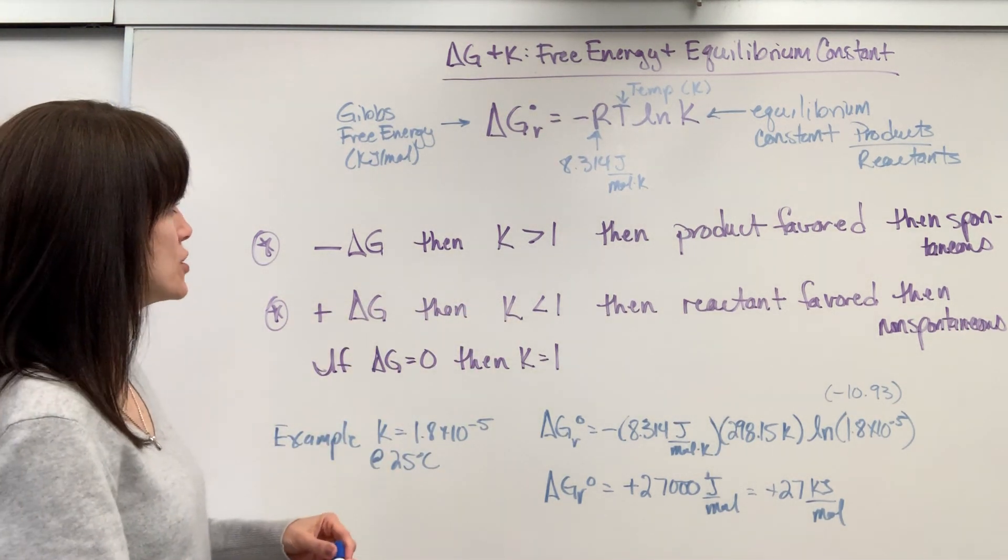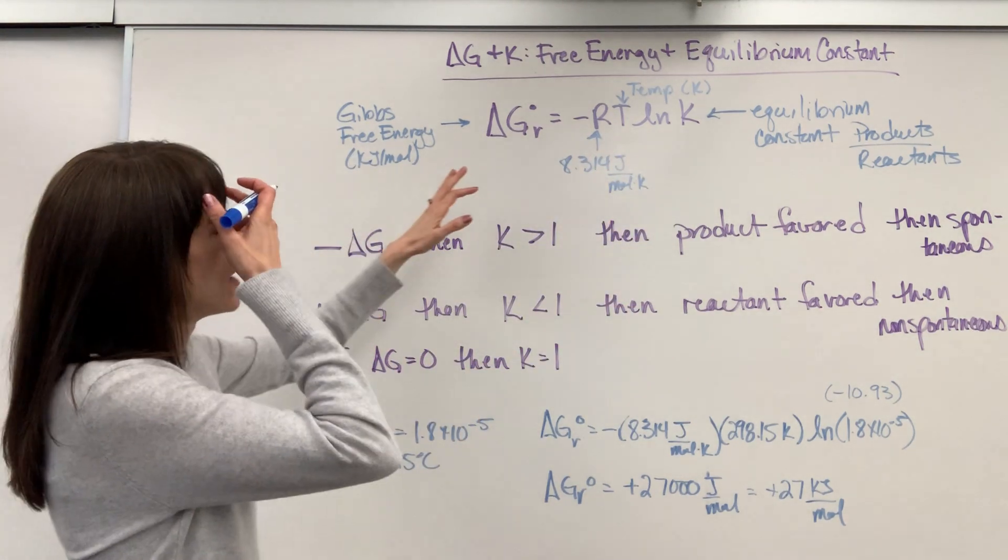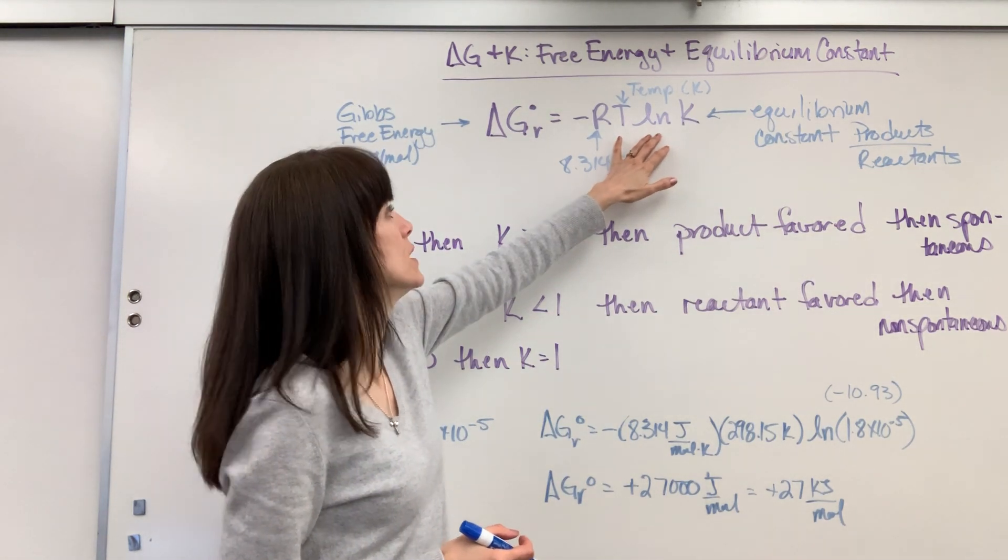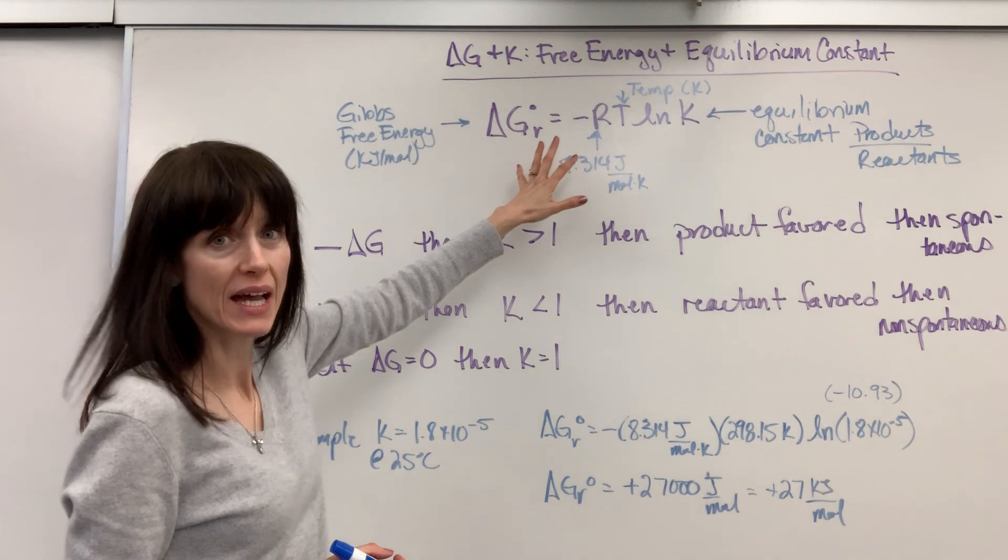Now, you could be given delta G and have to find the equilibrium expression. Let me rearrange this for you. To undo a natural log, you have to do the E. So I'm going to divide the RT over and then raise both sides to the E.